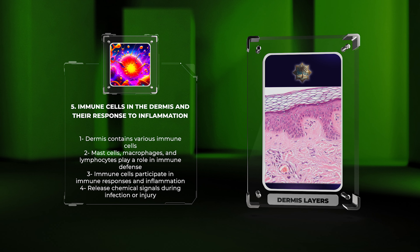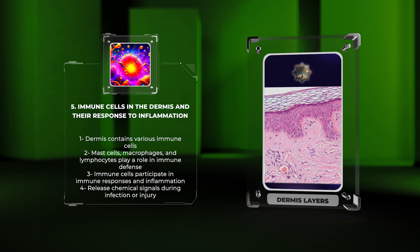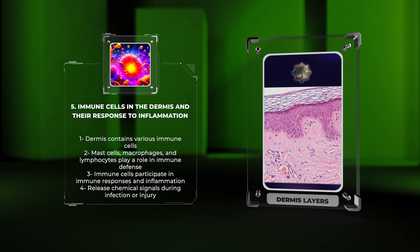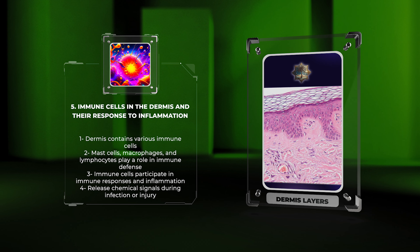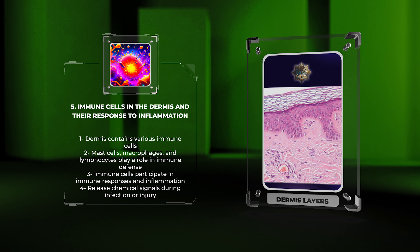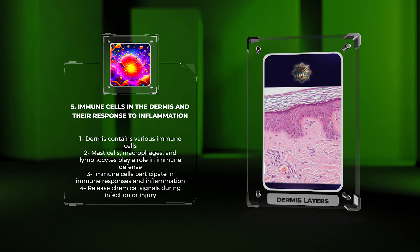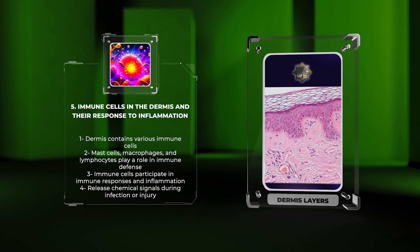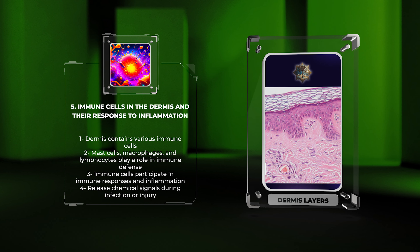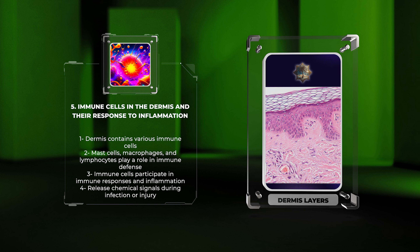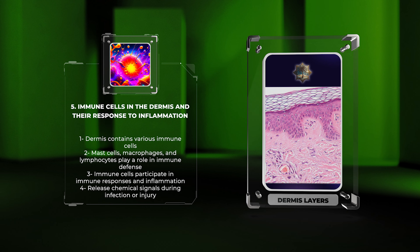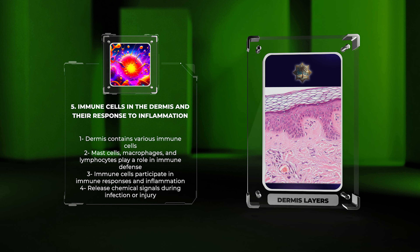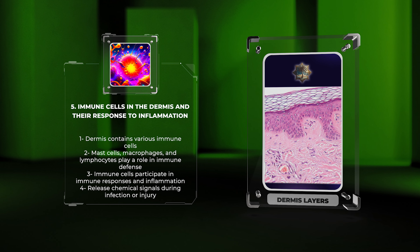When the dermis encounters pathogens or injury, immune cells release chemical signals leading to inflammation and the recruitment of additional immune cells to eliminate the invader or repair the damaged tissue. The dermis thus plays a crucial role in immune surveillance and response.